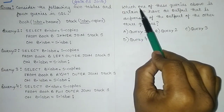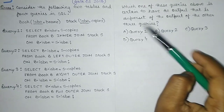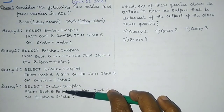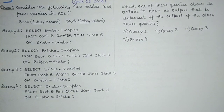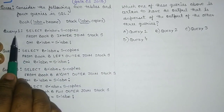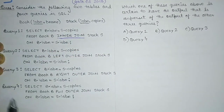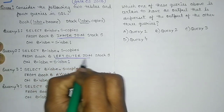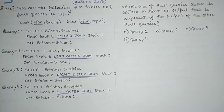In this GATE 2018 question, two tables are given — books and stock — along with four SQL queries. The question asks: which one of these four queries is certain to have output that is a superset of the output of the other three queries? That means, which query will contain all the records that the other three queries return? By observing the queries, you can see that all four involve different types of joins.